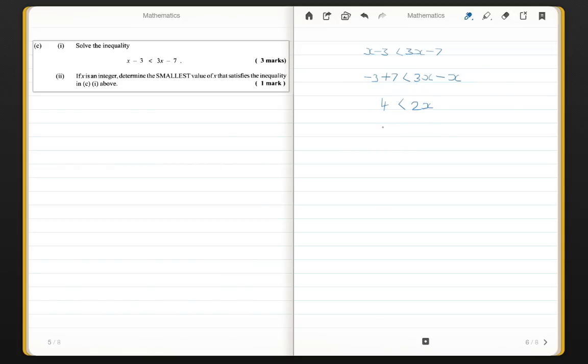So, 4 divided by 2 is 2, 2 divided by 2 is x. And this is my answer for part 1.